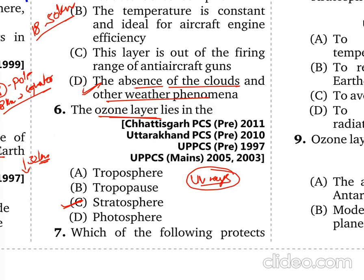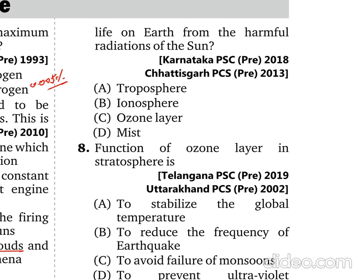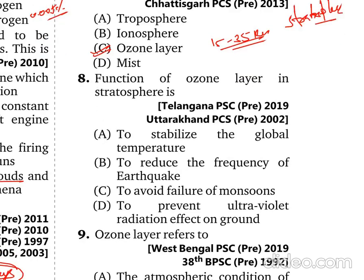The ozone layer is located approximately 15 to 35 km above the Earth's surface, within the Stratosphere. It protects life on Earth from the harmful radiation of the Sun. The function of the ozone layer in the Stratosphere is to prevent ultraviolet radiation from reaching the ground.